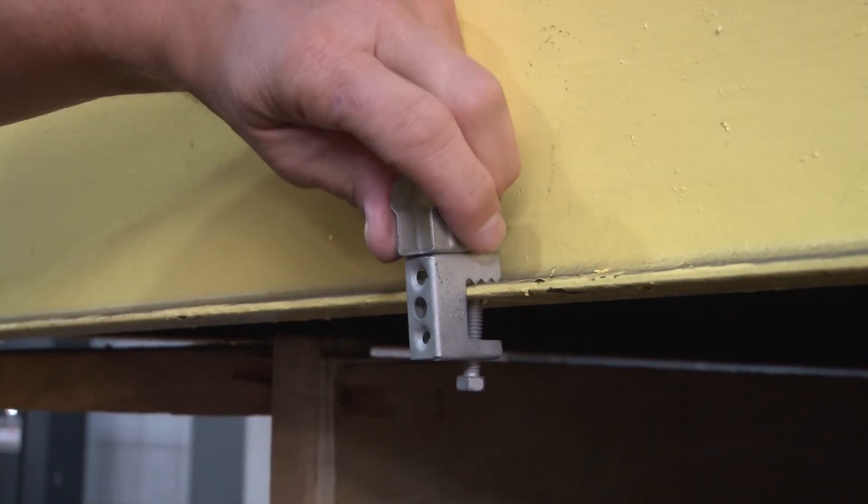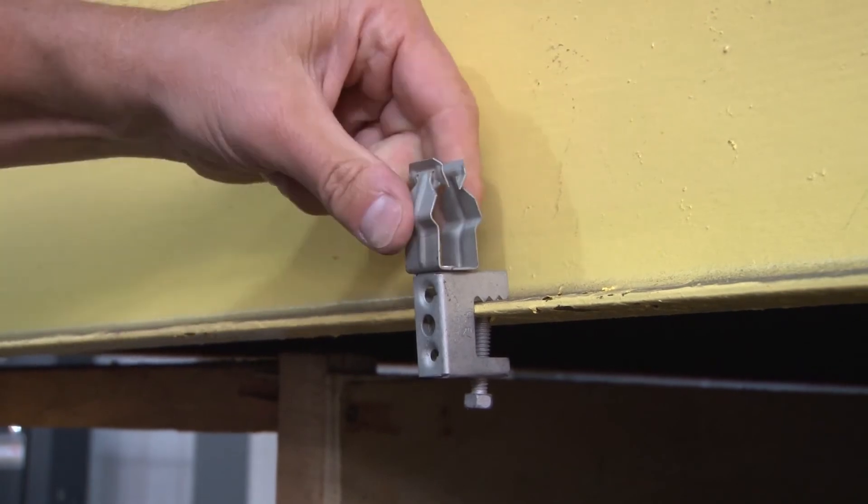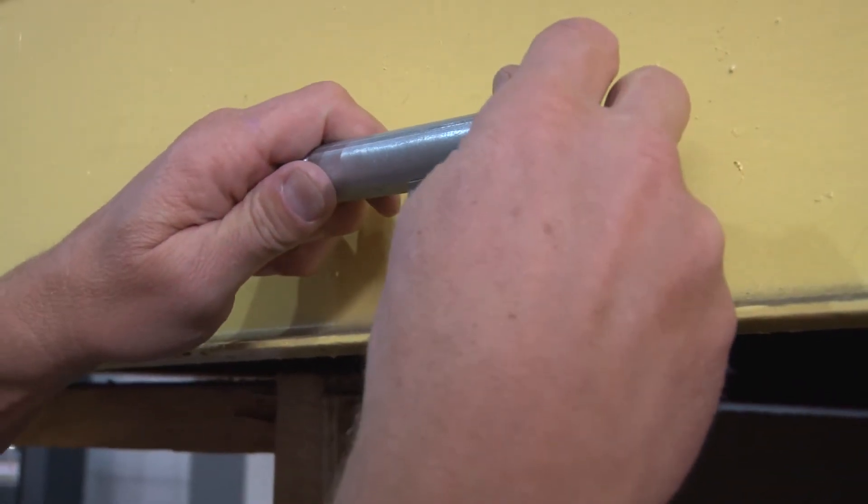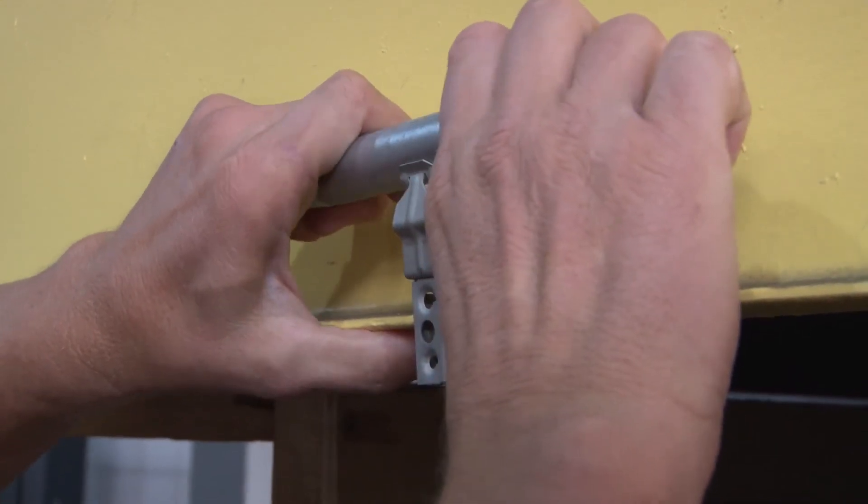To align your conduit in the proper direction, simply turn it to run along the beam. Set your conduit in place, snap it in like so.